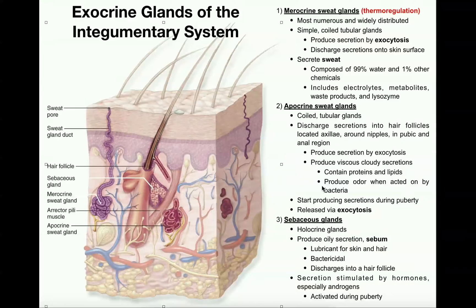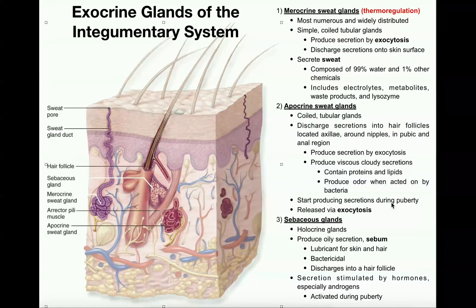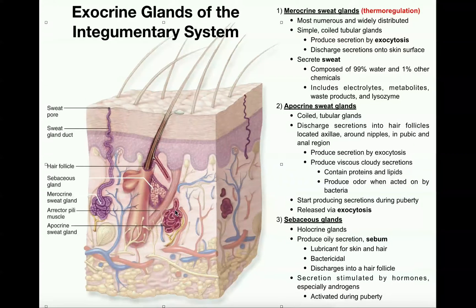Apocrine sweat glands start producing their secretions normally around puberty, which is why kids don't really have body odor. Once they enter puberty, their apocrine glands become very active and they start developing odor in those areas. The reason is that apocrine glands have receptors for testosterone, and testosterone levels increase substantially during puberty, causing apocrine glands to become more active.